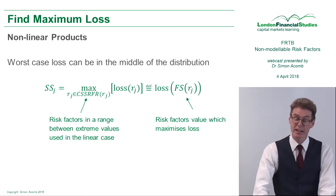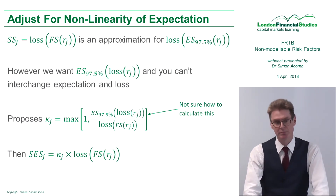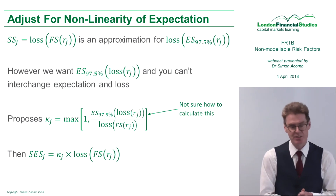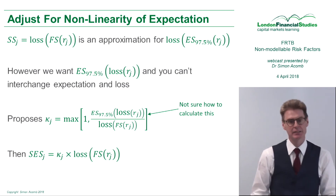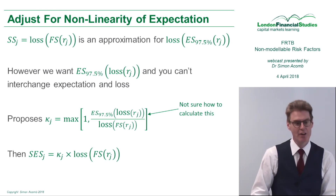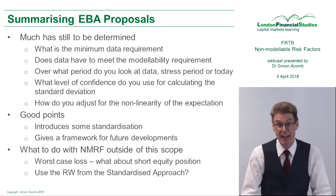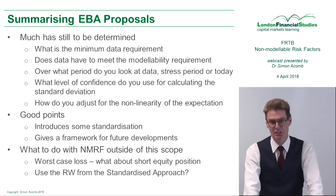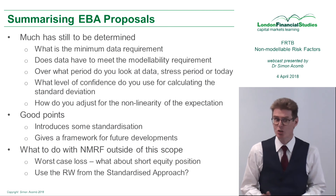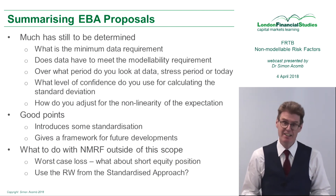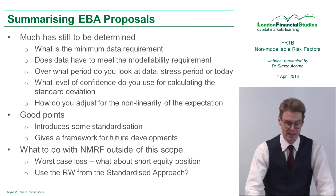Unfortunately, there is still one thing missing: an adjustment for the non-linearity of the expectation. The extreme stress loss of the worst-case risk factor is technically an approximation for the loss. For non-modelable risk factors outside the scope of this approach — where perhaps you have no observations over the last year, or only a couple — the original proposal says you take the worst-case loss. It's not entirely clear what that would mean for a short equity position, where theoretically the loss is infinite.